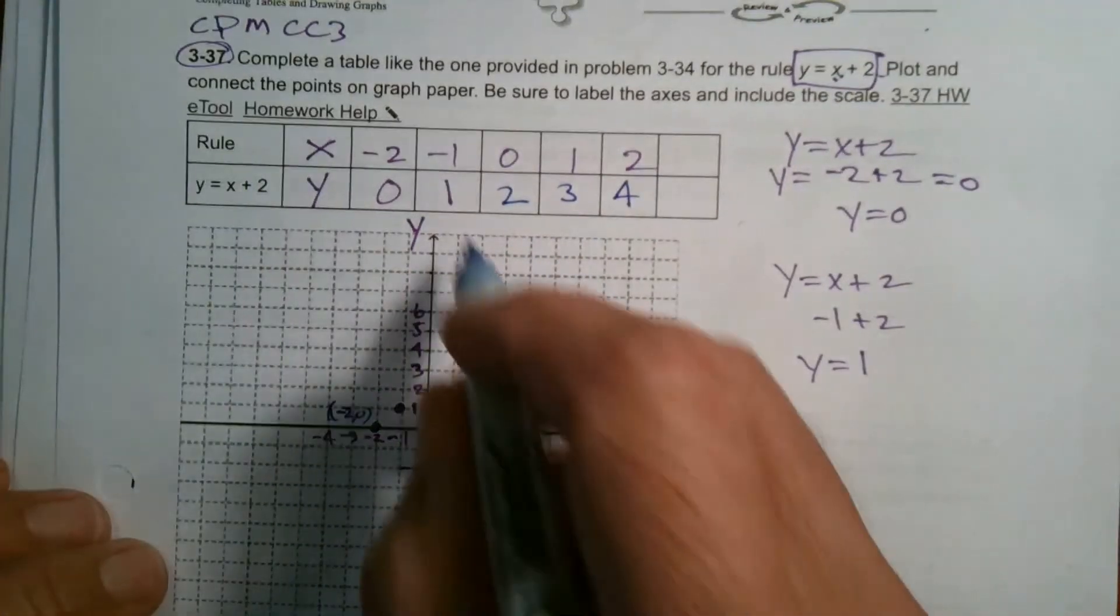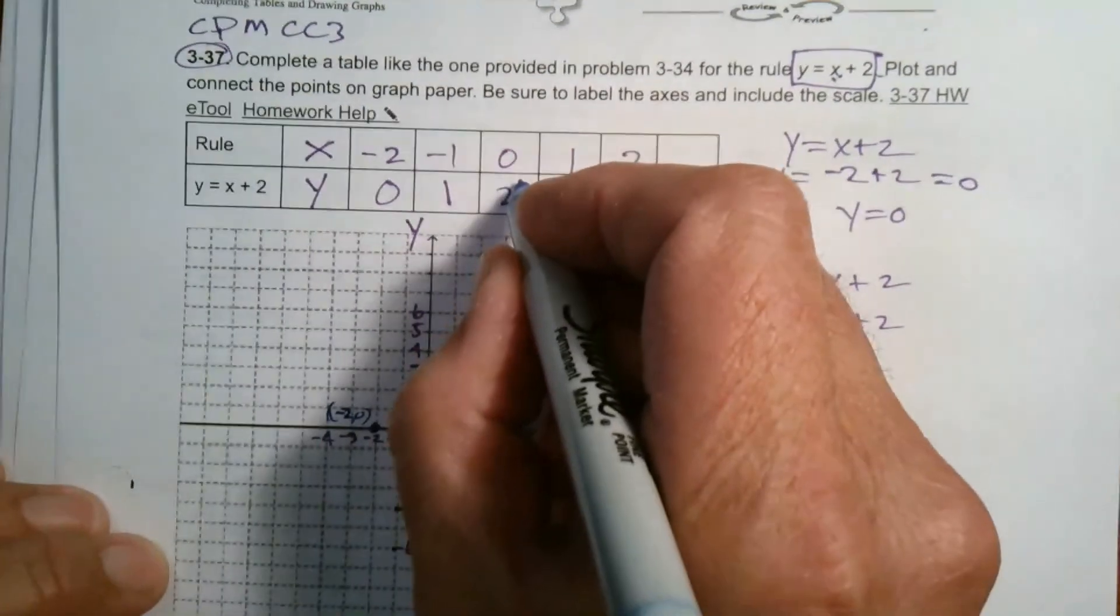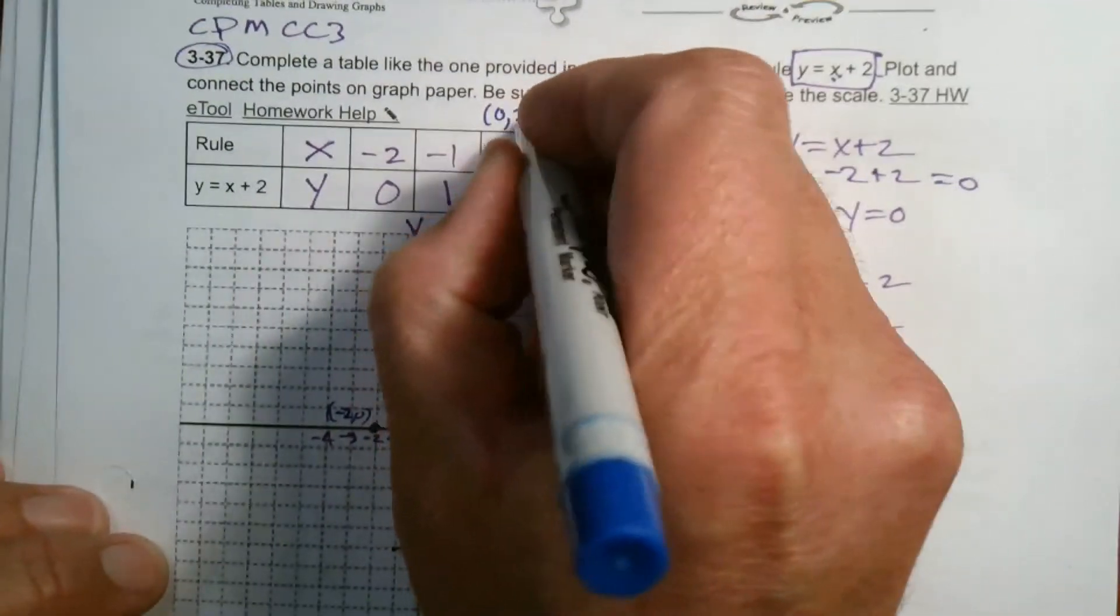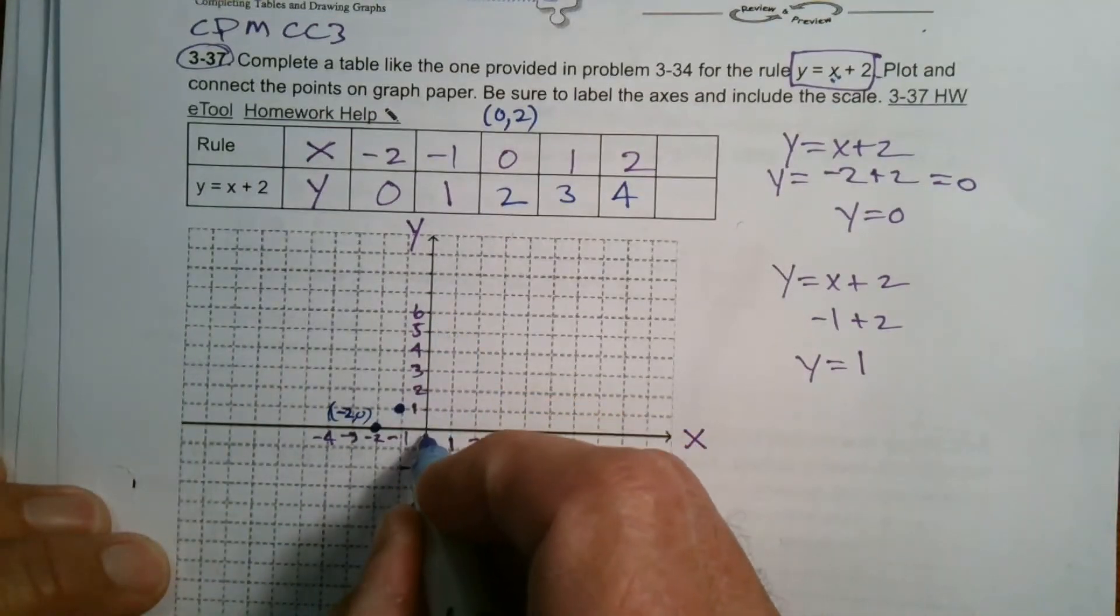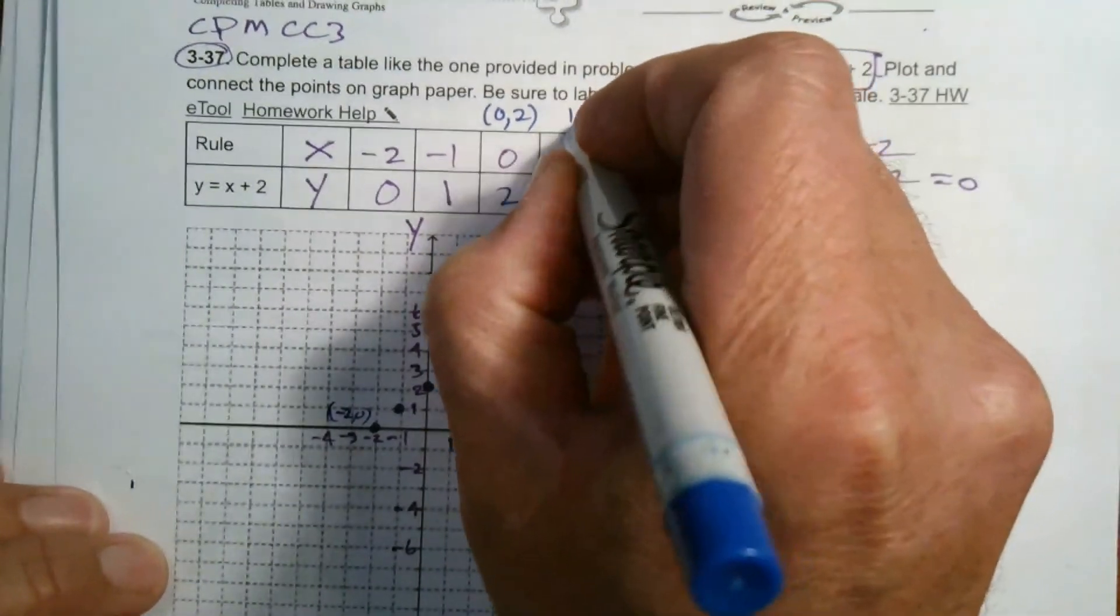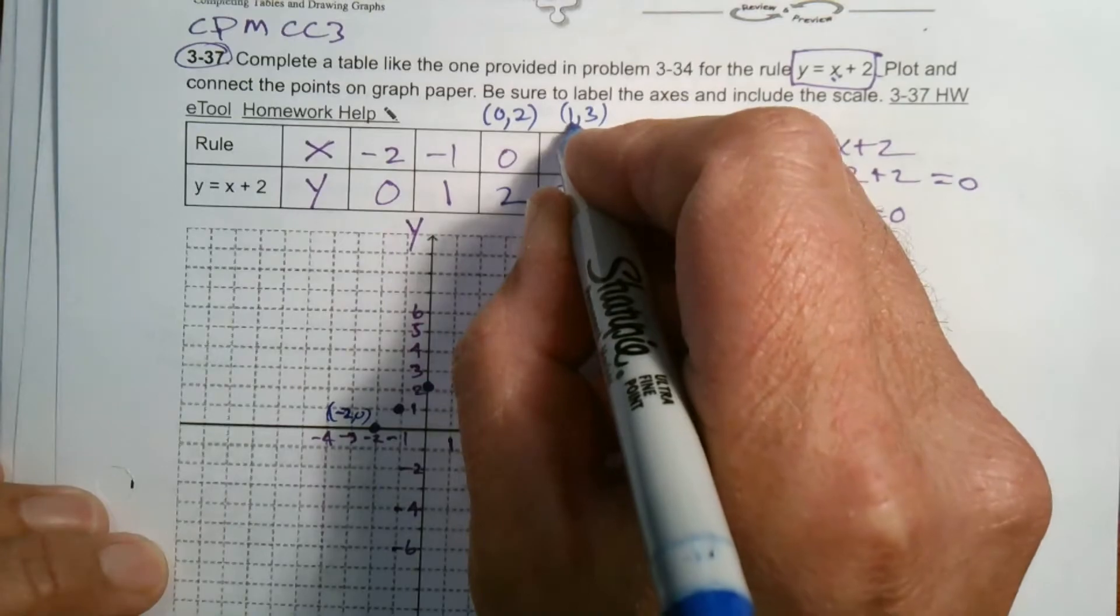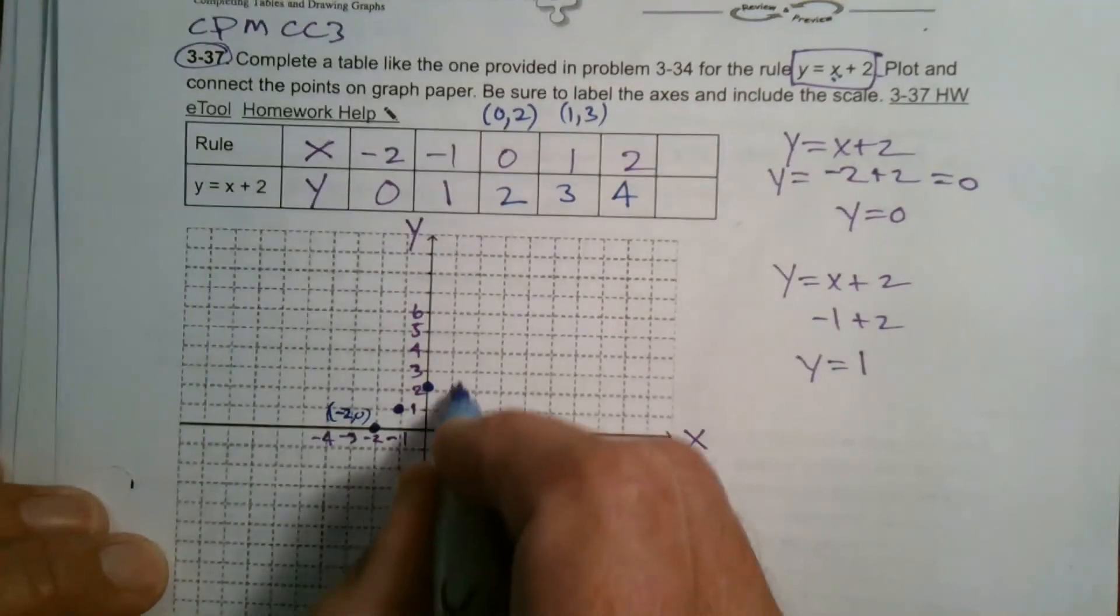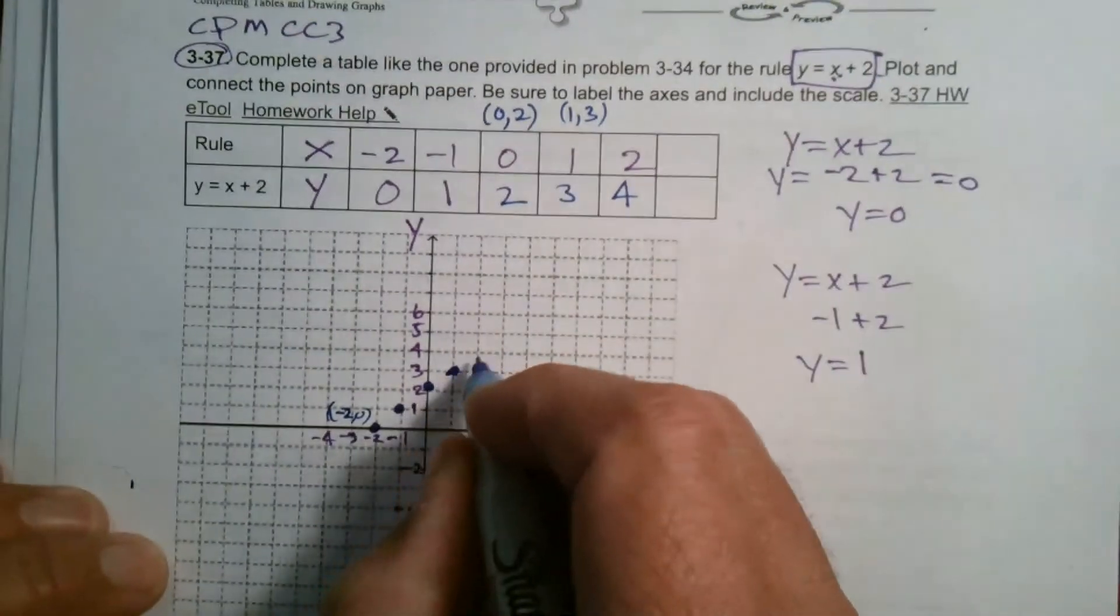So graphing, finish off the graphing for these points. So 0, 2, x is 0, y is 2. So that's the point 0, 2. So 0 for x, 2 for y is right here. And then this point here, this is the point where x is 1, y is 3. So it's 1, 3. So where's that? 1, 3 is right here. And then 2, 4 is right here.